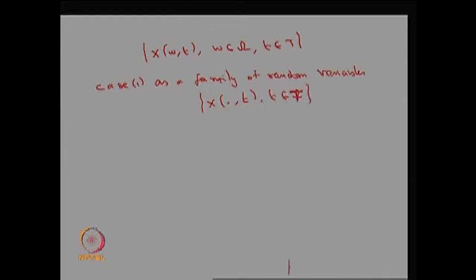This is the easier approach in the sense that once I know the different t values, for a fixed t it is going to be one random variable. I have collected a family of random variables for different values of small t, and therefore this is the way we can create the stochastic process.